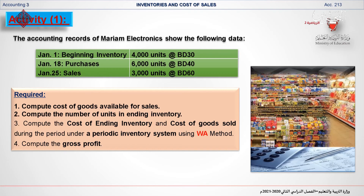The requirements are: (1) compute the cost of goods available for sale; (2) compute the number of units in ending inventory; (3) compute the cost of ending inventory and cost of goods sold during the period under a periodic inventory system using the weighted average method; and (4) compute the gross profit.